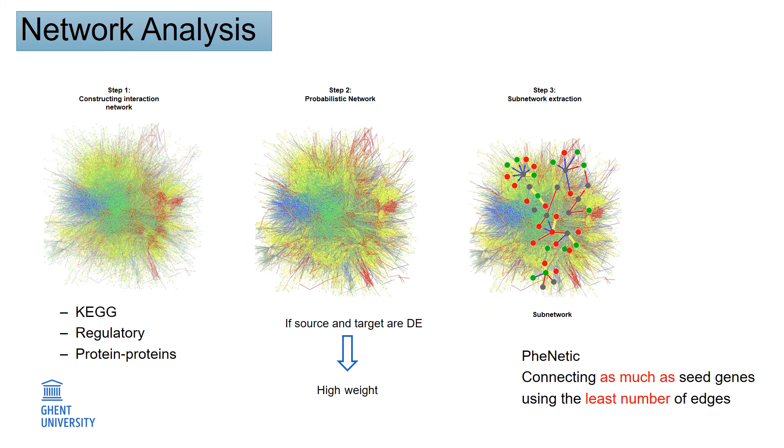And to identify restored, non-restored, and compensatory pathways, we mapped the genes from group A, B, and C on the interaction network. First, we construct the interaction network by integrating edges from KEGG regulatory and protein-protein interaction network.